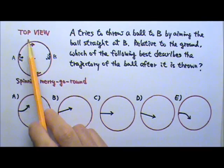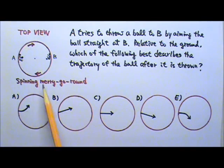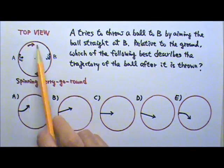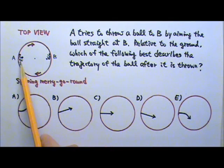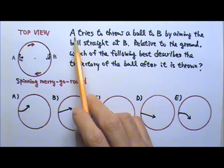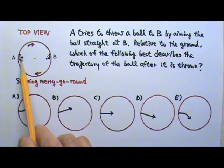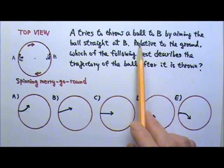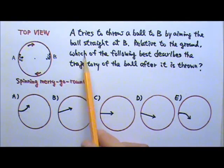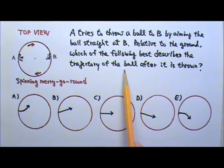This is the top view of a spinning merry-go-round. The merry-go-round is spinning in a clockwise direction. Two people are sitting on the merry-go-round, A and B. A tries to throw a ball to B by aiming the ball straight at B. Relative to the ground, which of the following best describes the trajectory of the ball after it is thrown?